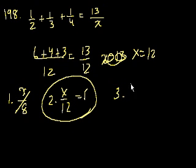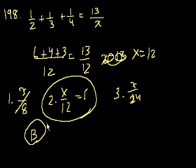Choice 3, x divided by 24. No, x is 12, so x divided by 24 is half. So 2 only is the answer, and that is choice B. Problem 199.